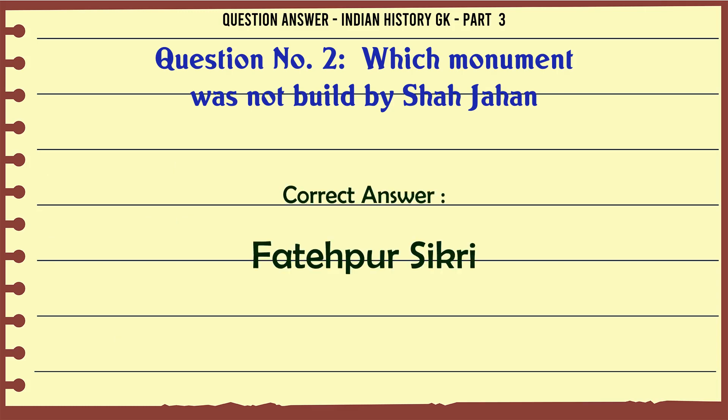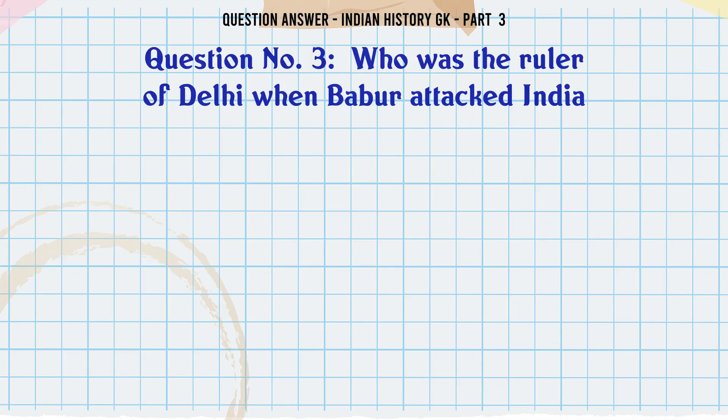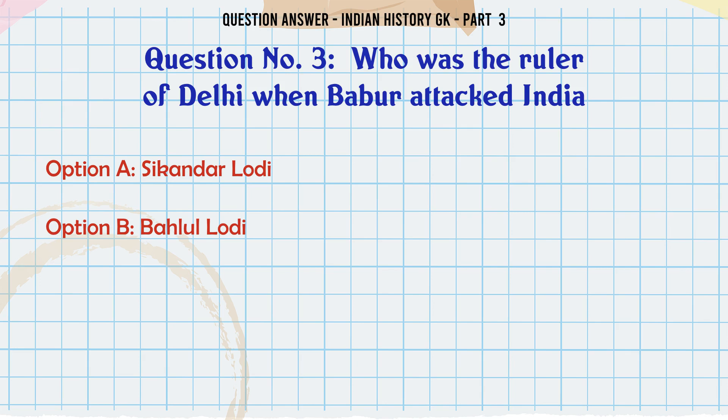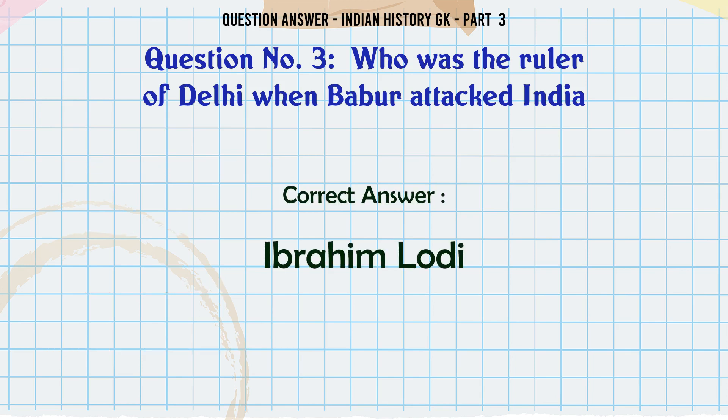Who was the ruler of Delhi when Babur attacked India? A. Sikandar Lodi, B. Behlul Lodi, C. Mahmud, D. Ibrahim Lodi. The correct answer is Ibrahim Lodi.